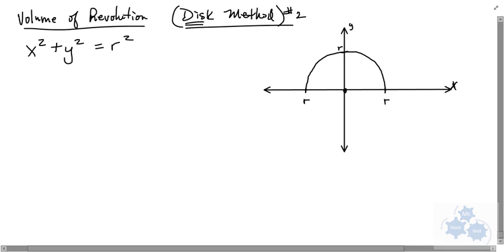First of all, the equation for a circle about the origin is x squared plus y squared equals r squared. That's the equation to make a full circle around the origin. So if we isolate for y, we're going to get y squared equals r squared minus x squared, and we're going to get y equals plus or minus the square root of r squared minus x squared.